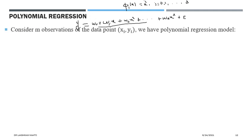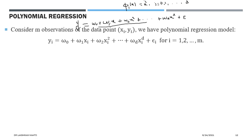For polynomial regression, consider m number of observations. For the i-th sample, the regression model is: y_i = omega_0 + omega_1 * x_i + omega_2 * x_i^2 + ... + omega_d * x_i^d + error term. The sample size varies from i = 1 to m, so there are m number of samples.